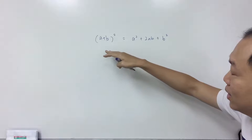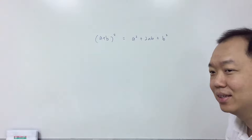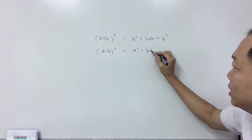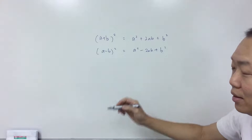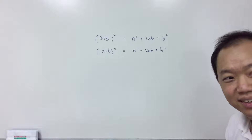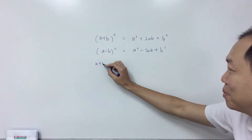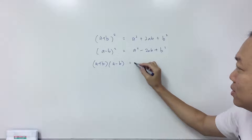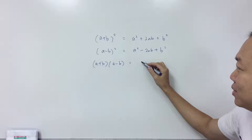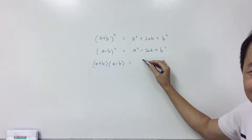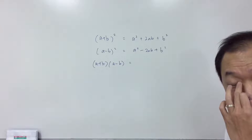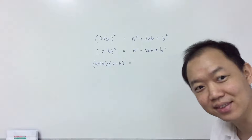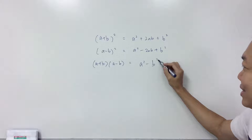Okay, once you have the first one, the second one is easy. A minus B squared equals A squared minus 2AB plus B squared. And the third one: A plus B times A minus B equals A squared minus B squared.